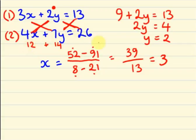I am going to substitute into my second equation to verify. My x value is 3, so 4 into 3 is 12, and 7 into 2 is 14, that equals 26. Hence my x and y values are confirmed.